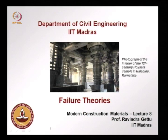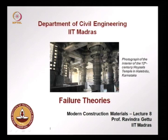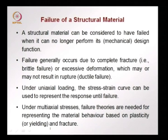I start with this picture of a temple in Halabit, Karnataka, which has survived since the 12th century. We see in the picture a lot of nice stone columns which have survived, taken the load for many hundreds of years and have not failed. What do we consider as failure? A structural material is considered to have failed when it can no longer perform its design function, and here we are talking about mechanical aspects.